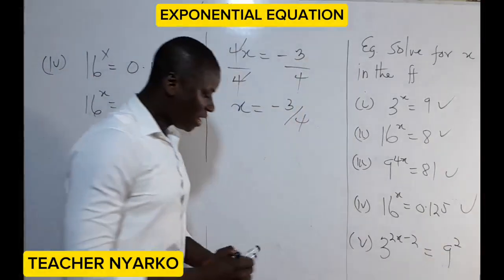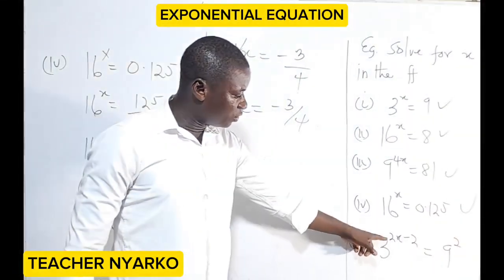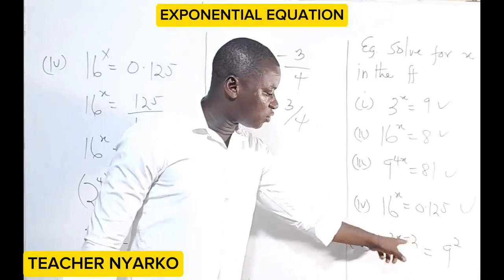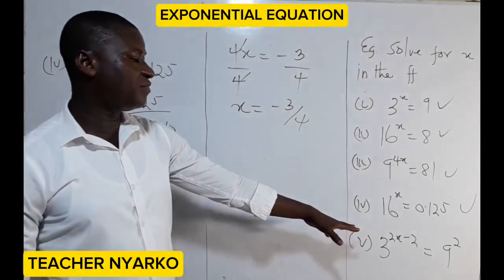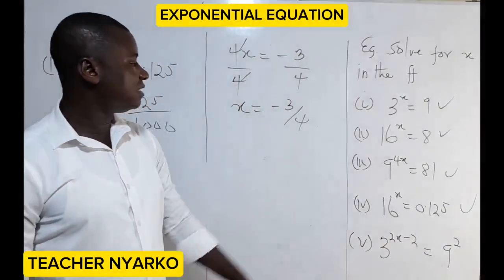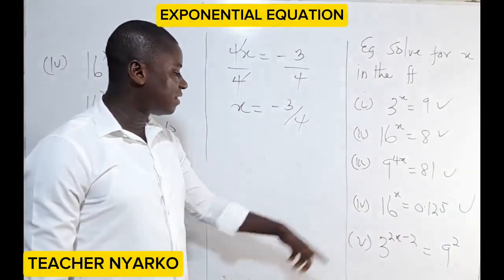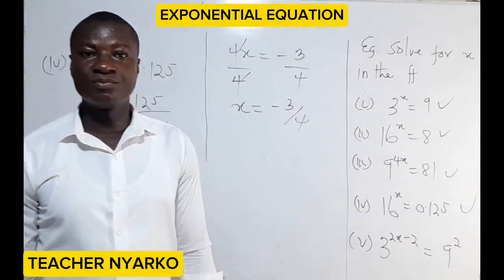Now I give this to you as your assignment: 3 exponent (2x minus 2) equals 9 squared. Solve for x. Simplify and you will arrive at the answer. God bless you. Follow for more.